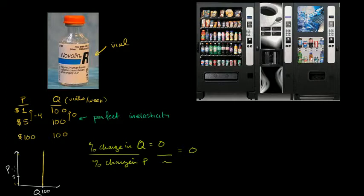Now let's go to another extreme. This is perfectly inelastic. You can imagine — what is perfectly elastic? Something where quantity changes a lot if you have a small percentage change in price. And to think about that, let's look at these two vending machines.